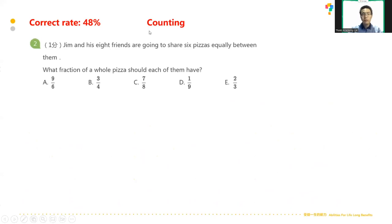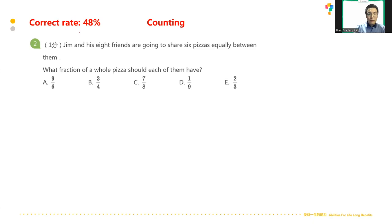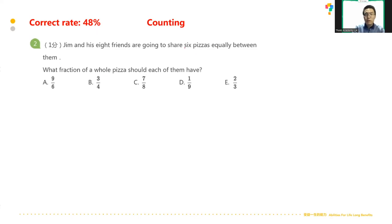Question number two — I forgot to categorize all the questions; I will send the correct version of the PPT after the walkthrough in the WeChat group. The correct rate for question two is 48%. The question is: Jim and his eight friends are going to share six pizzas equally between them. What fraction of a whole pizza should each of them have?